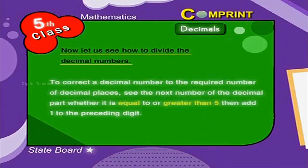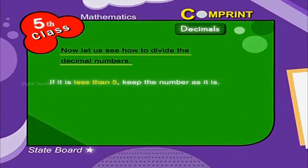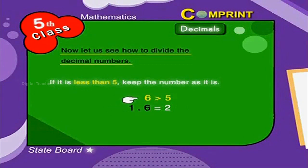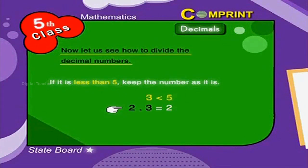To round a decimal number to the required number of decimal places: look at the next digit in the decimal part. If it is equal to or greater than 5, add 1 to the preceding digit. If it is less than 5, keep the number as it is. For example, 1.6 rounds to 2, and 48.7 rounds to 49. However, 48.22 rounds to 48, and 2.3 rounds to 2, because 2 is less than 5.